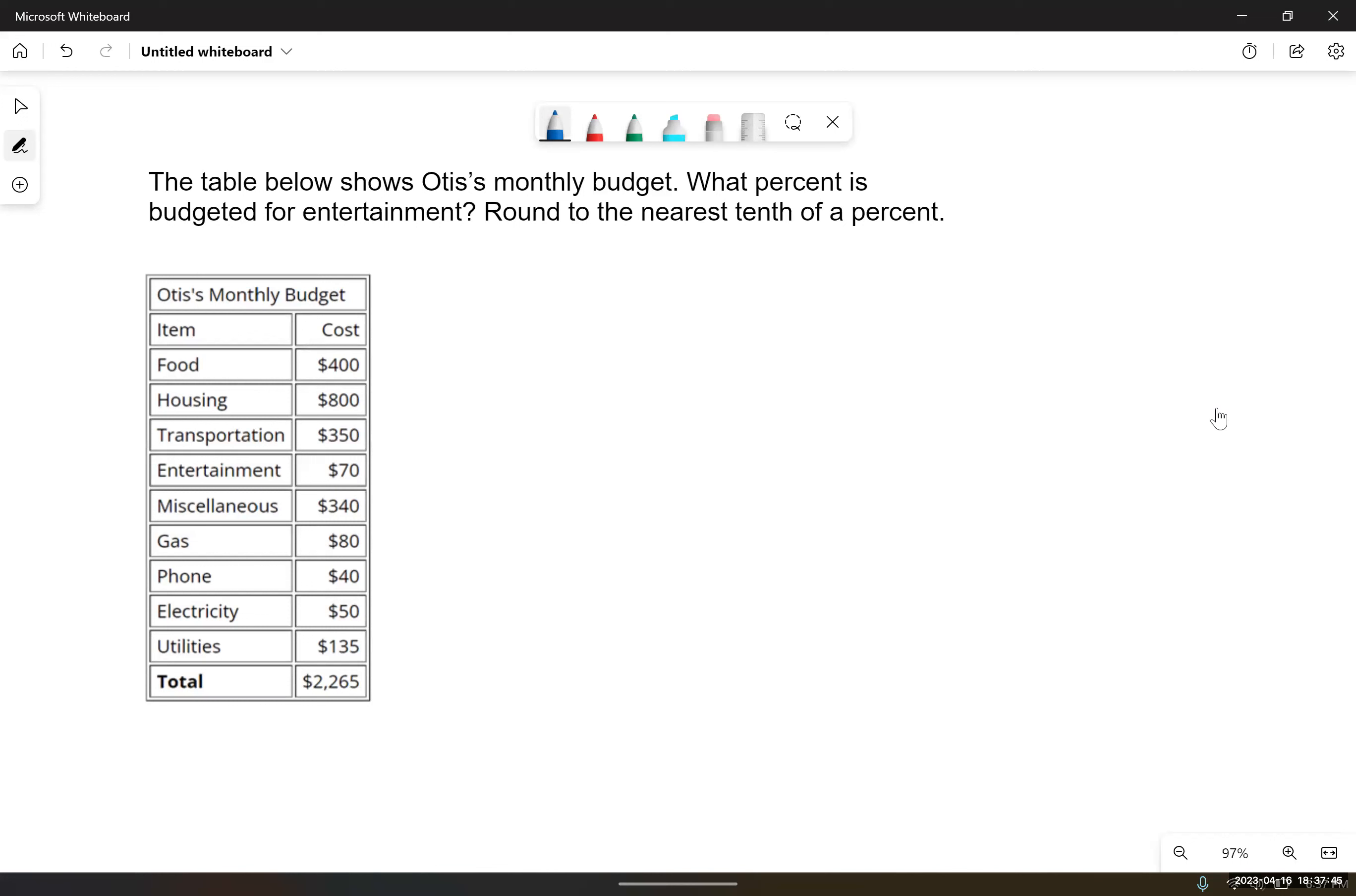All right, so let's just focus in on the numbers in this table that are relevant to the problem. We're looking at entertainment, and that's $70, and we're comparing that to his total budget. So what percent of the total budget is budgeted for entertainment? We're going to look at the total amount, which is $2,265.